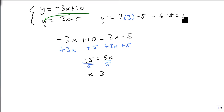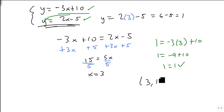To check our answer, we know it works for this one since we solved for it while using this one, so let's plug it into the other one. Is 1 equal to minus 3 times 3 plus 10? That's 1 equals minus 9 plus 10. Sure enough, it works for the first one, it works for the second one. So our answer is the point 3, 1.